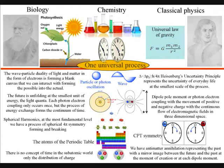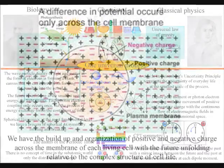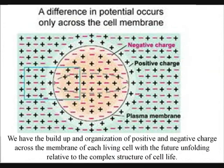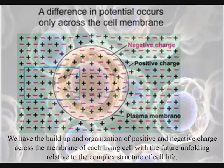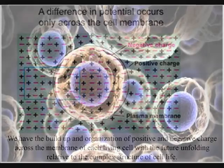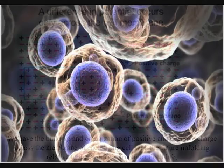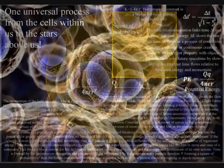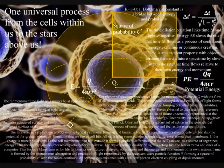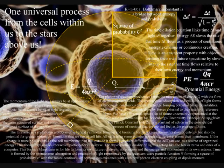And this is where the biophoton comes in, by creating a certain degree of order, which is transferred by the spontaneous absorption and emission of light with the movement of charge. We have the build-up and organization of charge relative to the membrane of each living cell, with hundreds of thousands of chemical reactions in each cell at any one moment.